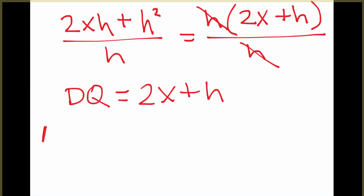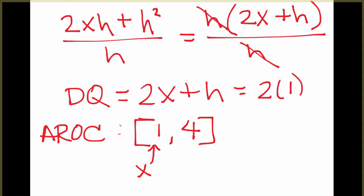Now how do you use that to find the average rate of change? Let's say that we want to find the average rate of change on the interval from 1 to 4. Well, this first value here is always our x, what we're starting with. So in this formula we'll plug in a 1 for our x. But the h, if you remember back to a few slides ago, the h is the length of our interval.